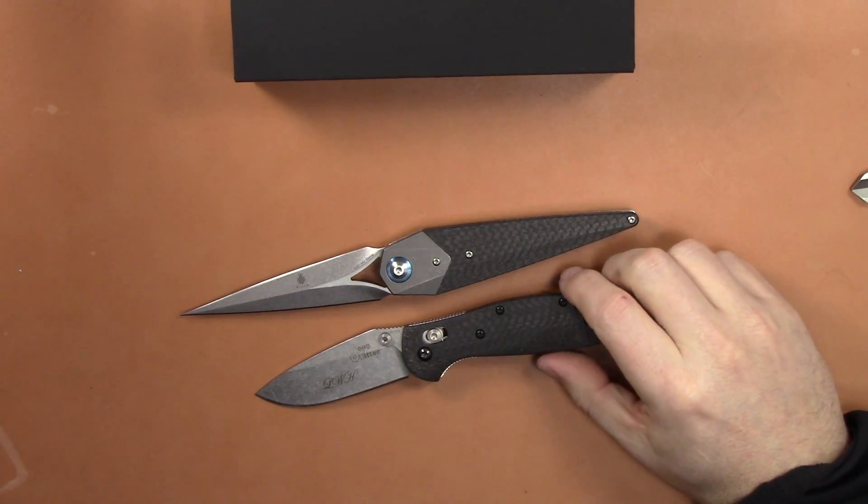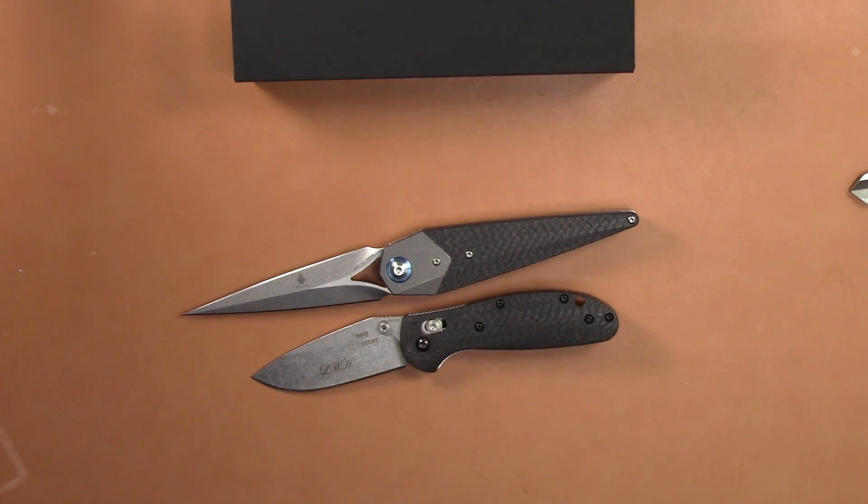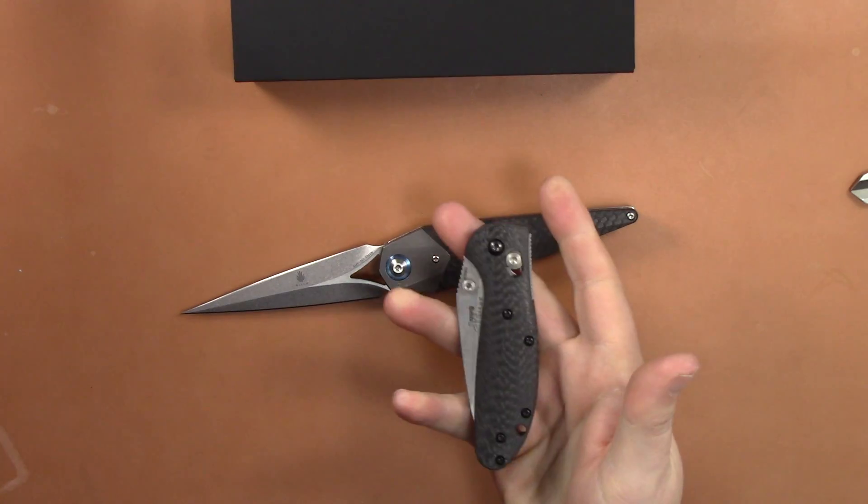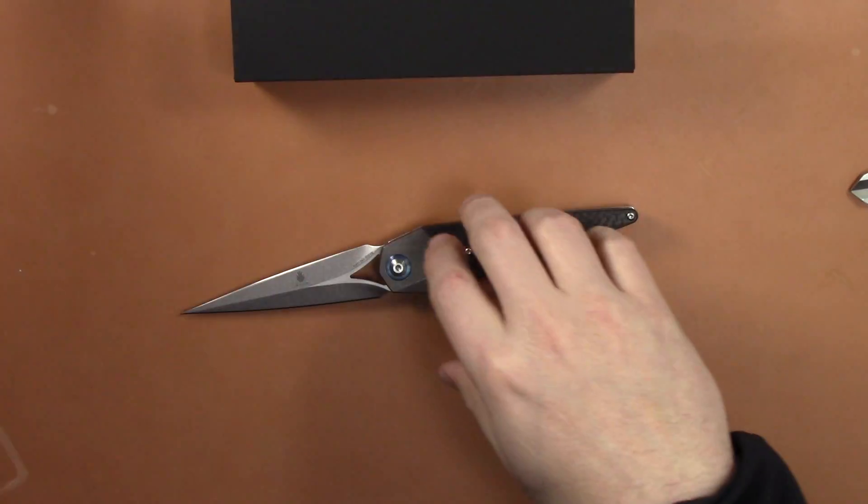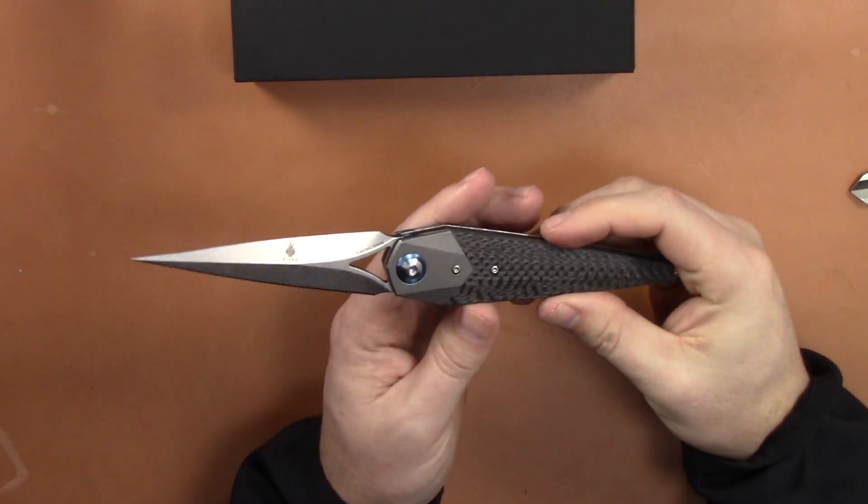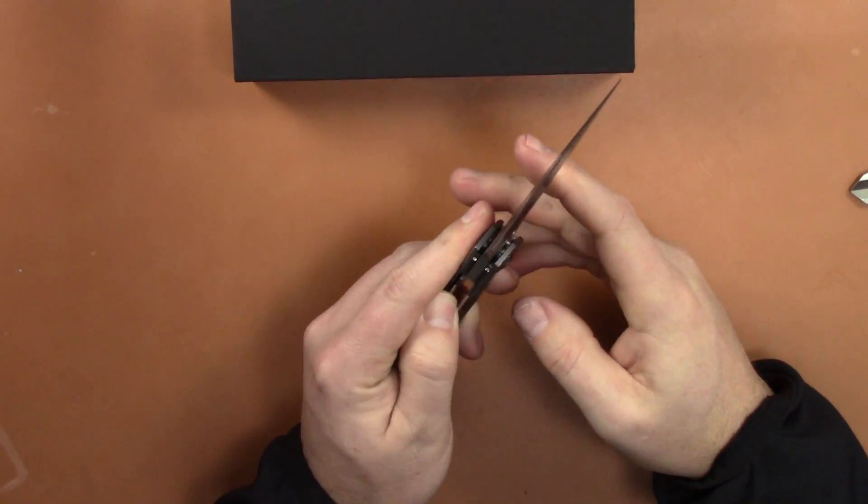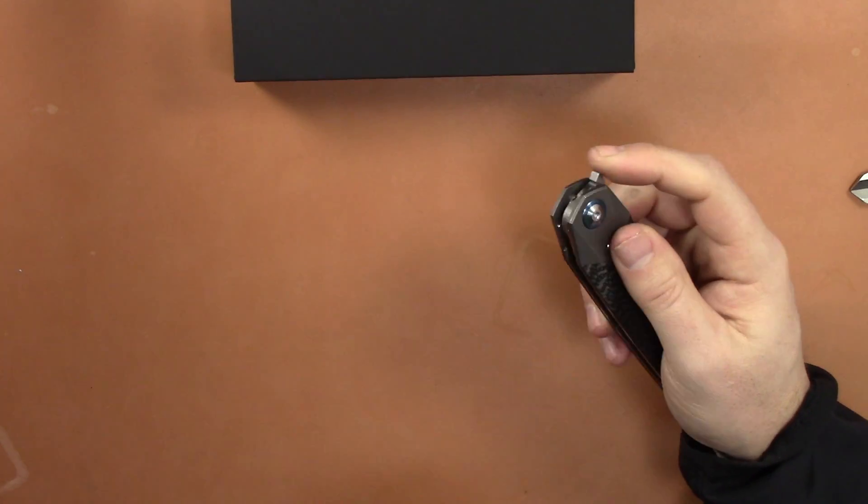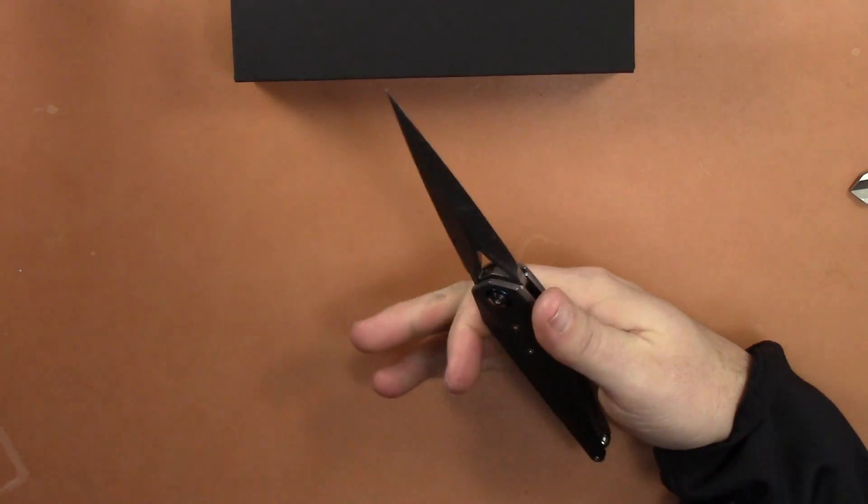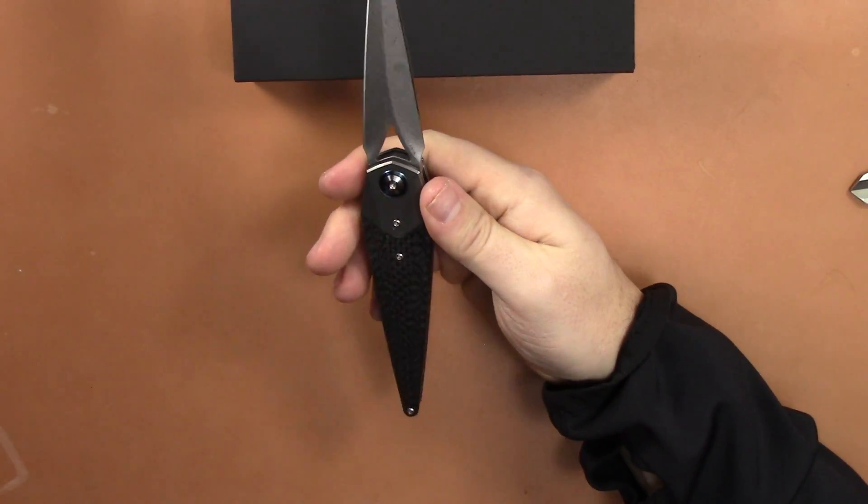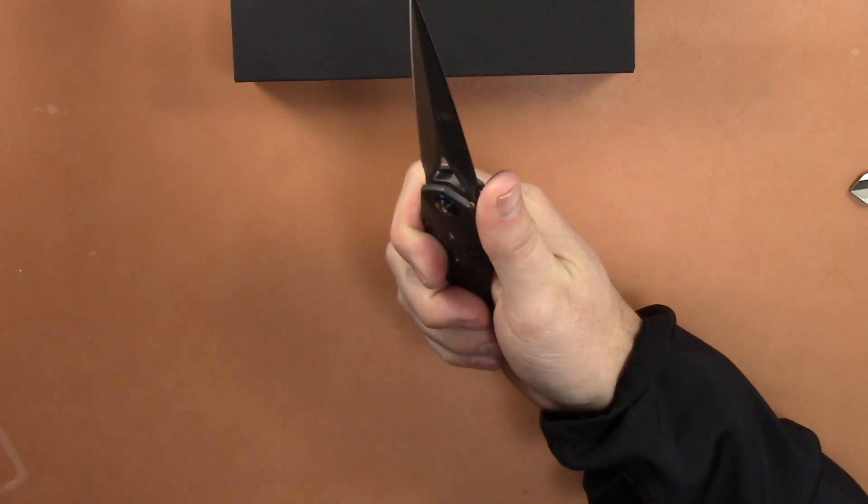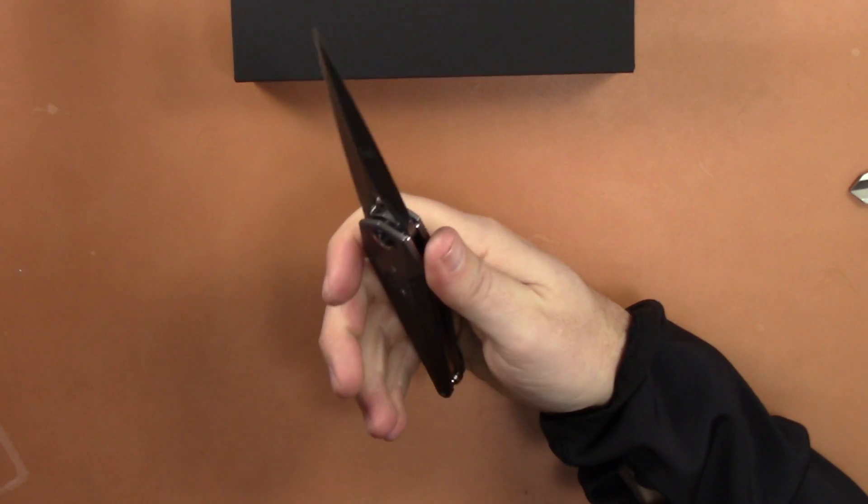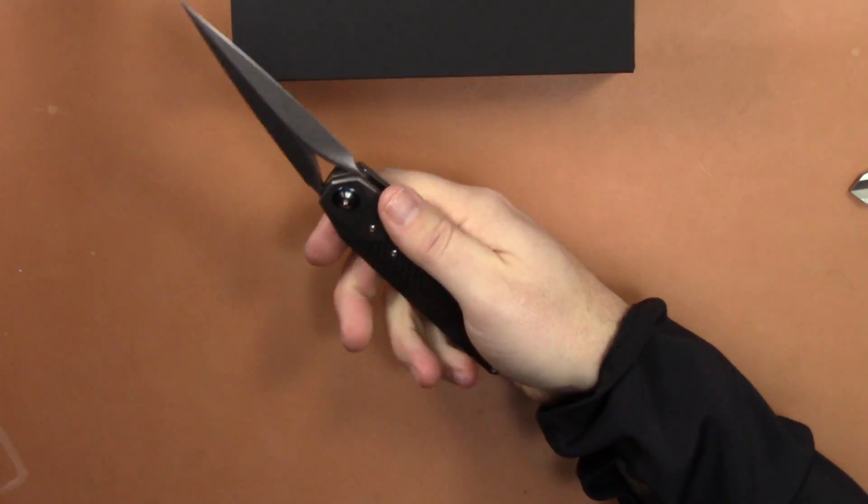But then you look at a blade shape and a handle shape like this and you think, man, that's crazy. But you know it's definitely a knife, it cuts things, it's sharp, and it's a nice flipper. Handle is kind of like a teardrop almost but it comes down to a pretty good point down here. It feels good in the hand, it's not uncomfortable, there's no hot spots or anything. It's unique, it's definitely different than anything I've ever felt before, but it's not bad.